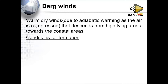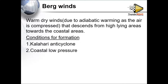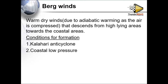Now we need to understand the conditions that result in the formation of berg winds. The first condition is the Kalahari anticyclone existing in the interior — it is a continental high pressure system. The second condition is the coastal low pressure at the coast.